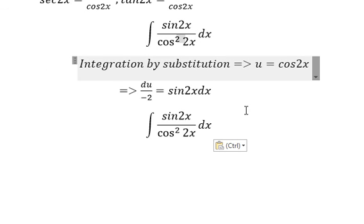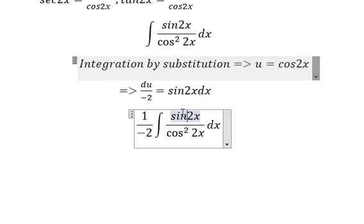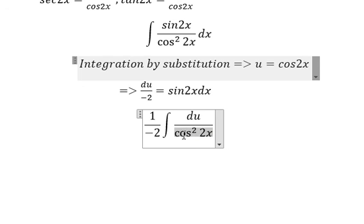Now we need to change this integral. We replace sin 2x dx with du over negative 2, and cos squared 2x becomes u squared.